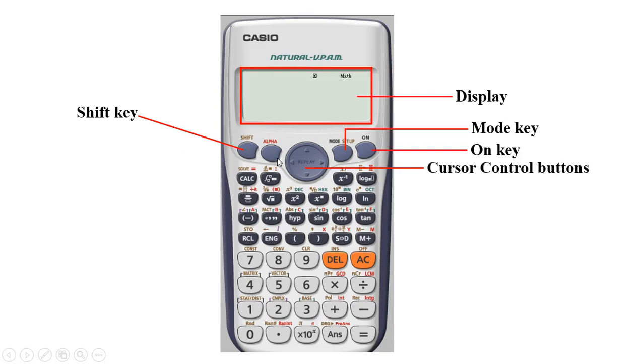So those are the keys you can access using the shift key. There are more as you can see: pi, statistics, metrics, all those things depending on the mode on which the calculator is operating.